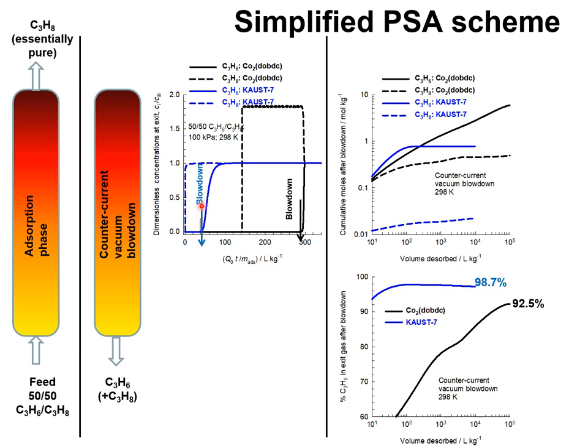At the times indicated, the adsorption phase is terminated and the desorption cycle consists of a counter-current vacuum blowdown. Deep vacuum is applied and the pressure at the exit is assumed to be 2 kilopascals. The simulations of the counter-current vacuum blowdown operations are shown here — black lines refer to Cobalt MOF-74 and blue lines correspond to KAUST-7. We examine the cumulative moles leaving the vacuum blowdown operations with the two MOFs.